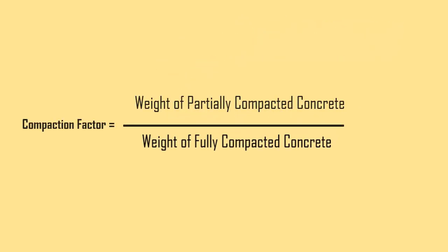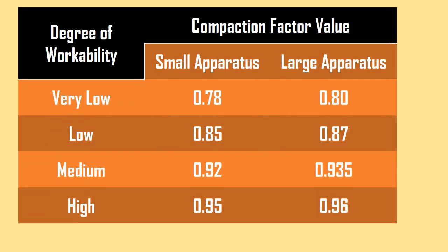The compaction factor is equal to the ratio of the weight of partially compacted concrete with the weight of fully compacted concrete. With the help of compaction factor value, the degree of workability is calculated with the help of the table.